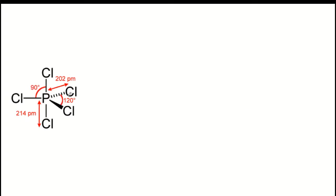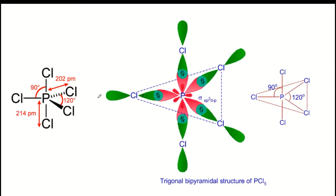There are two types of bond angles in this structure. The angle between equatorial chlorine atoms is 120°, and the angle between the axial Cl and equatorial Cl is 90°. The two axial chlorine atoms form a 180° angle with each other. The five sp3d hybrid orbitals of phosphorus overlap with the p orbitals of chlorine to form sigma bonds.